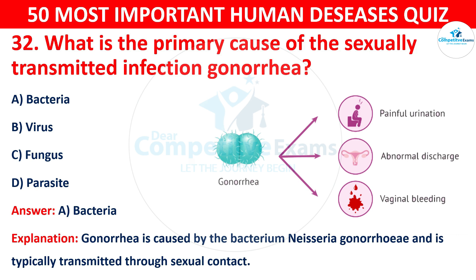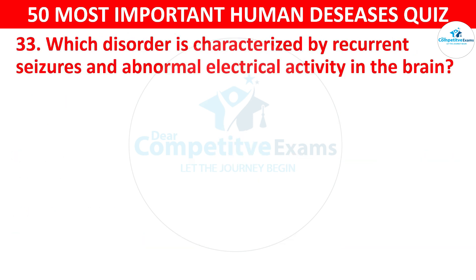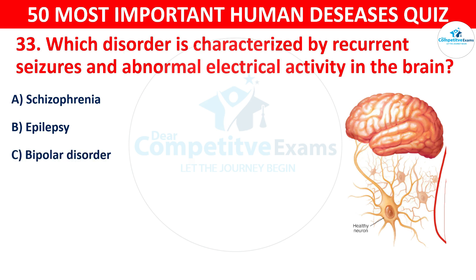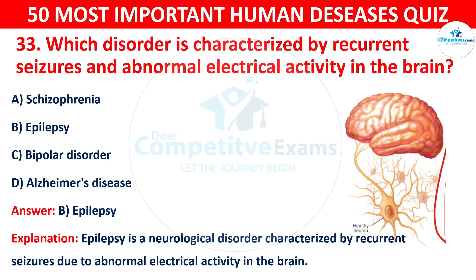Question 33: Which disorder is characterized by recurrent seizures and abnormal electrical activity in the brain? The options are: A) Schizophrenia, B) Epilepsy, C) Bipolar Disorder, or D) Alzheimer's Disease. The correct answer is B — epilepsy. Epilepsy is a neurological disorder characterized by recurrent seizures due to abnormal electrical activity in the brain.